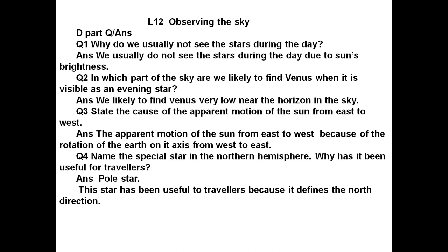Question number two. In which part of the sky are we likely to find Venus when it is visible as an evening star? Answer is, we are likely to find Venus very low near the horizon in the sky.